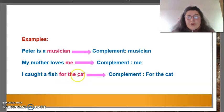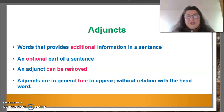Now, we are going to review adjuncts. Some ideas. Words that provide additional information in a sentence. Adjuncts are an optional part of a sentence. An adjunct can be removed and will not affect the meaning of the sentence. Adjuncts are, in general, free to appear without relation with the head word.